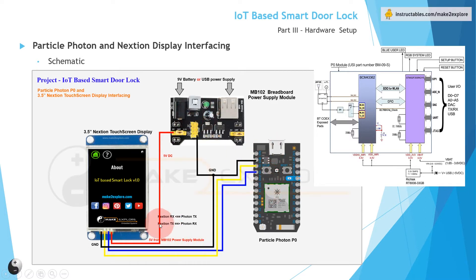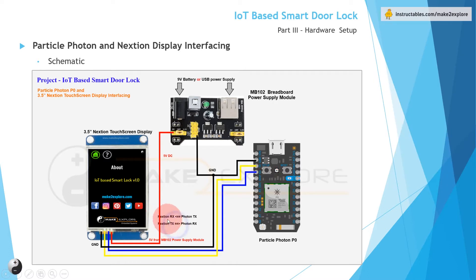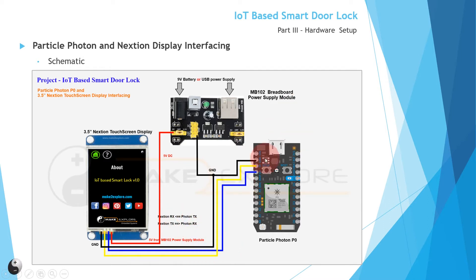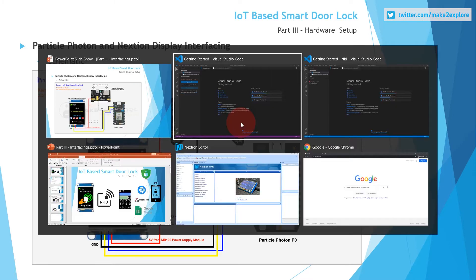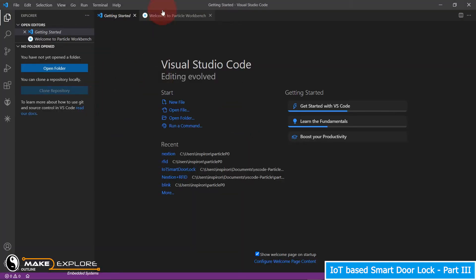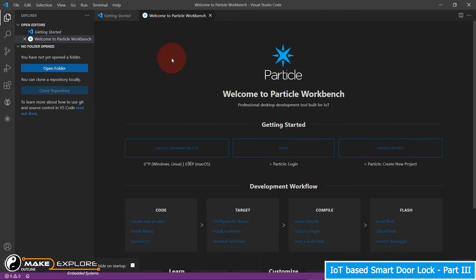The TX pin of the Nextion display is connected to the RX pin of Photon, and the RX pin of the Nextion display is connected to the TX pin of Photon. You will get this circuit diagram on our GitHub account. Now let's see how to program this circuitry, how to create a project, and how to add the Nextion library. Open VS Code editor, go to Particle Workbench, and create a new project.